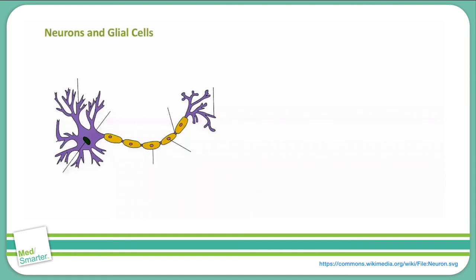We're all probably familiar with the fact that neurons are the signal transmitting cells of the nervous system. But there are a few extra details that you need to know about neurons and the other cells of the nervous system when you're preparing for step one.